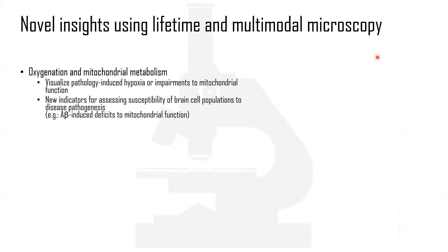The lifetime-based techniques we've developed for measuring oxygenation and mitochondrial function are very useful for filling key gaps in our understanding of disease progression. Using these methods, we're now able, for the first time, to look at intra- and extravascular oxygenation and specific alterations to mitochondrial function within individual cells in the native brain environment. We aim to utilize these methods to assess how different brain cell populations react to pathogenic threats, including the accumulation of toxic amyloid beta or localized disruption of cerebral blood flow.